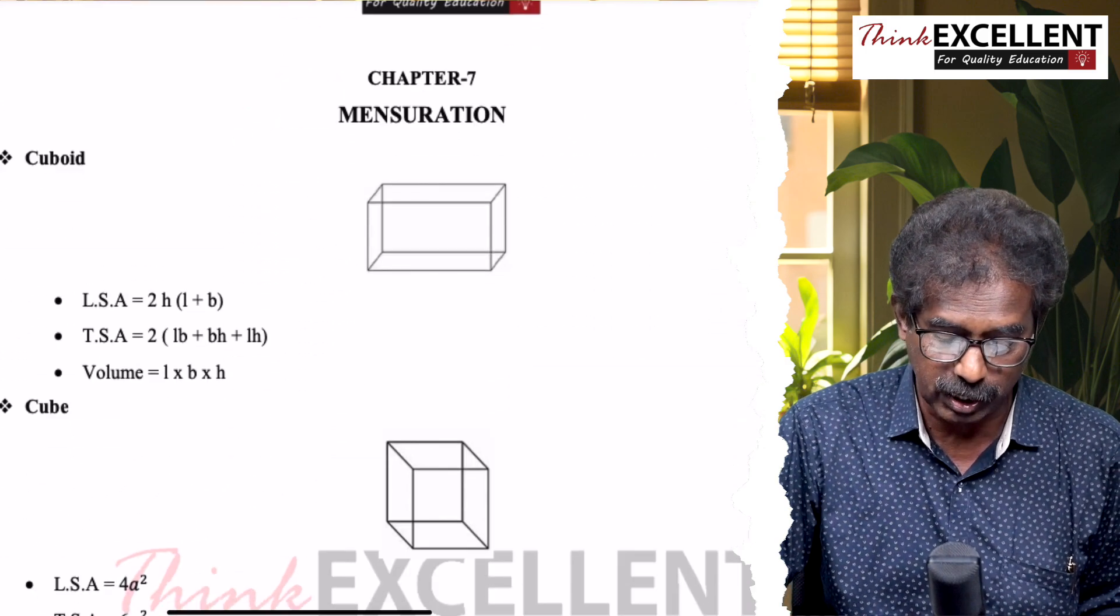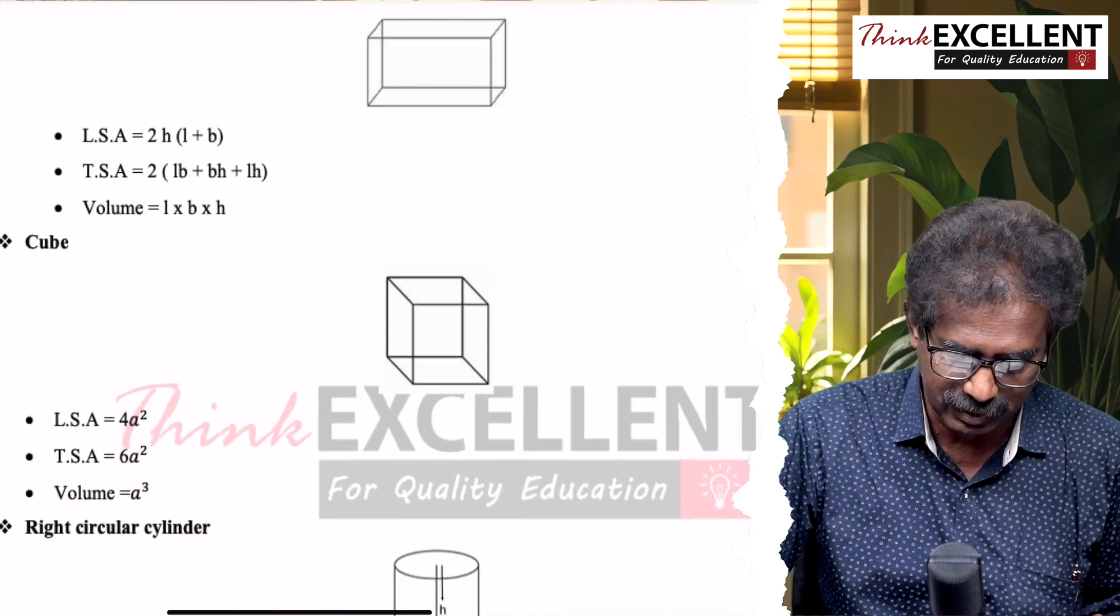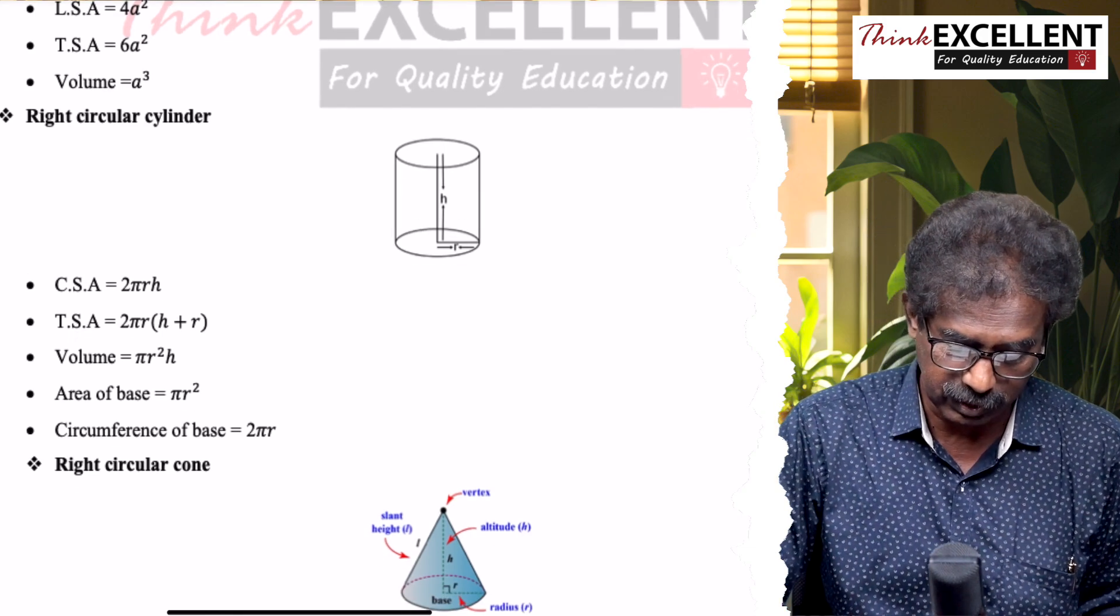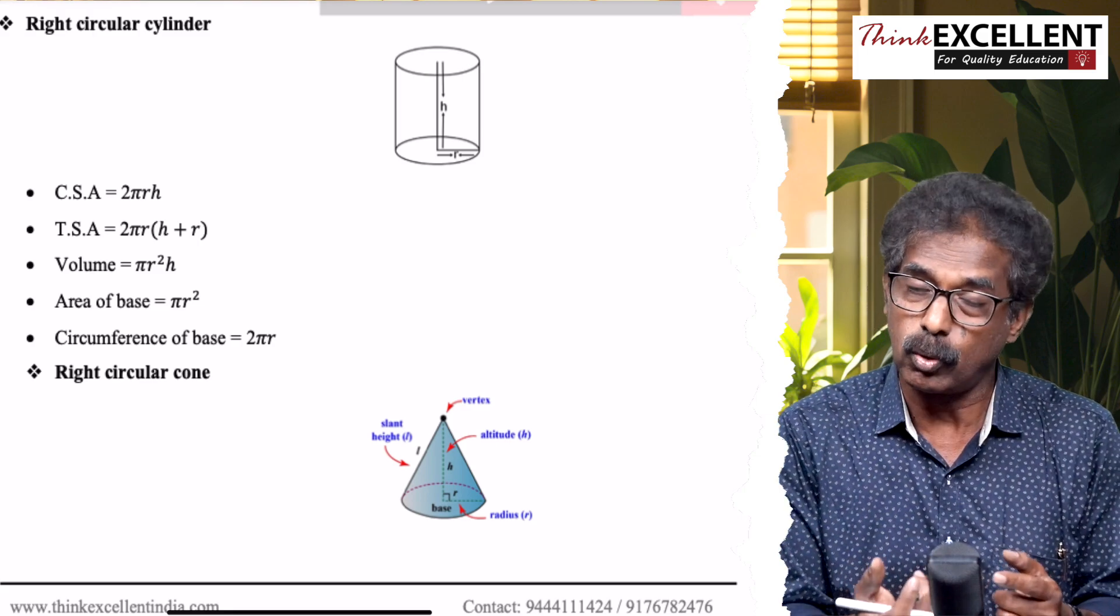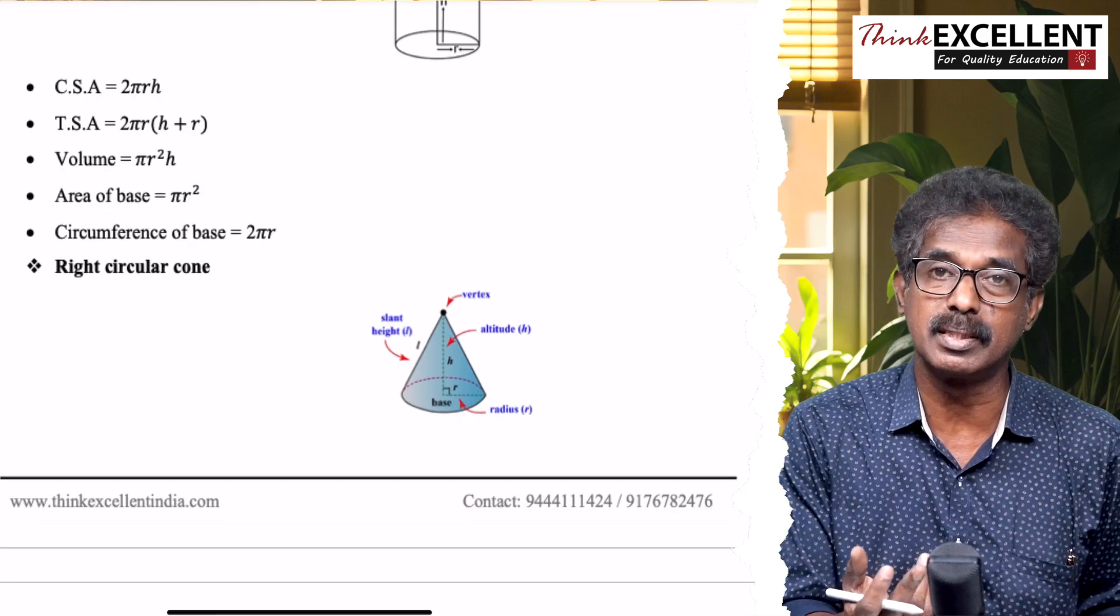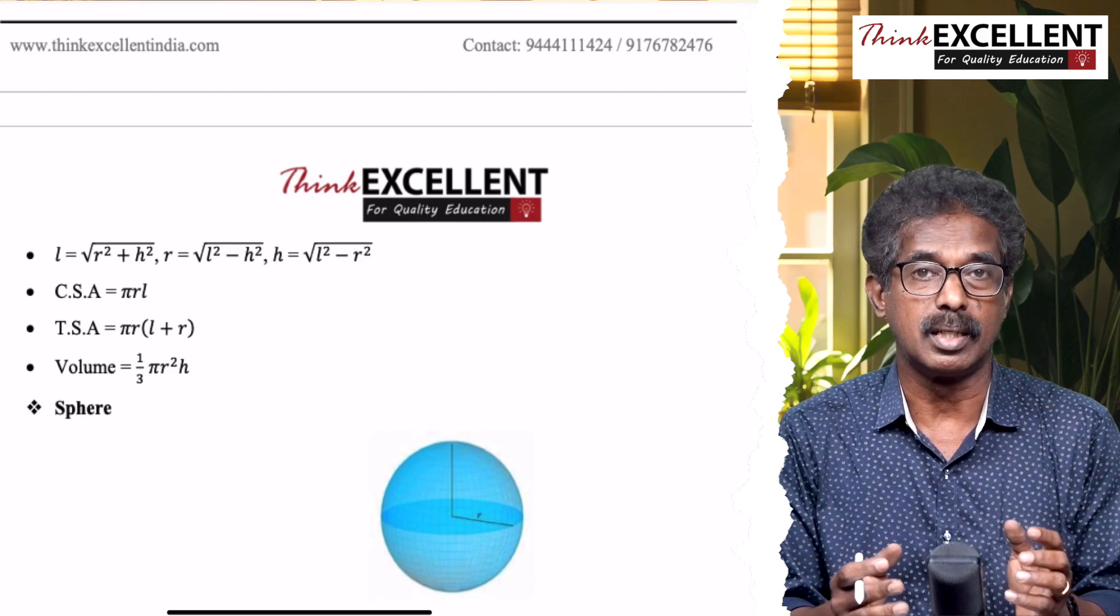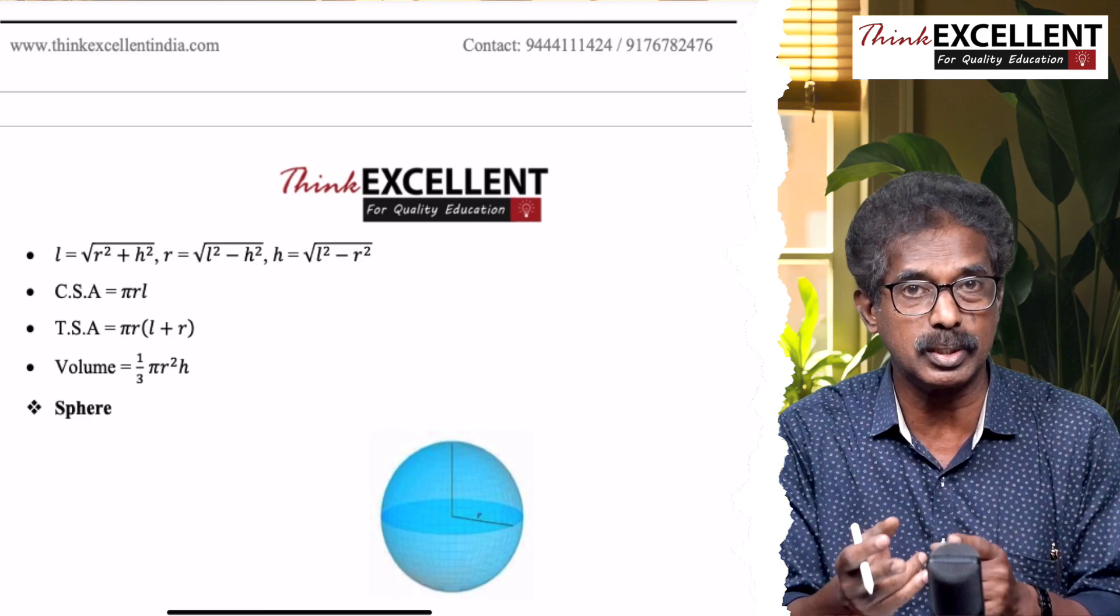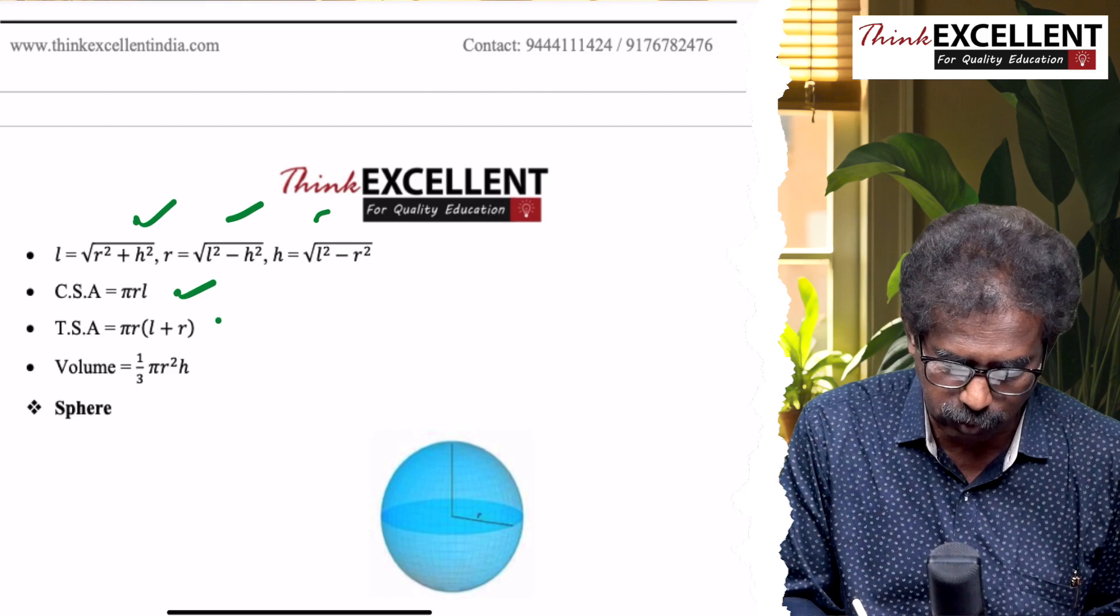Chapter number 7, Mensuration. Formulas, go through. Cuboid, cube: lateral surface area, total surface area, volume. Cylinder, right circular cylinder: curved surface area, total surface area, volume. Base is circle shape, so area of the base is πr², circumference of the base is 2πr. Then this is for right circular cone. Cone, three letters: slant height L, radius R, height H. L = √(r²+h²). Then curved surface area, total surface area, volume.